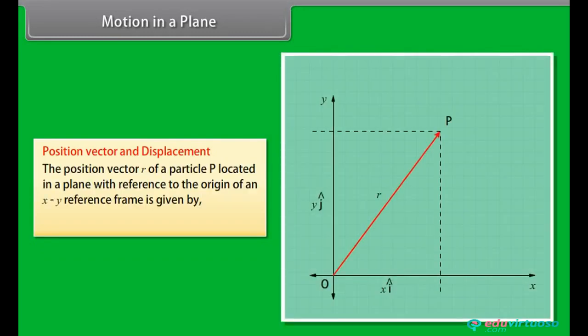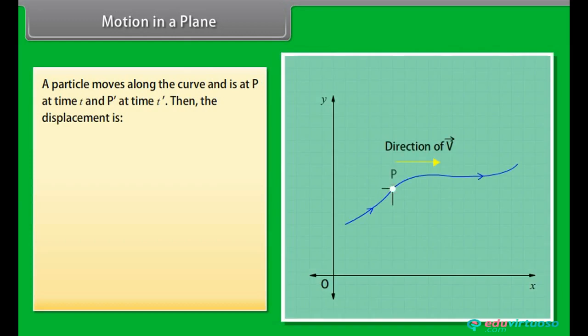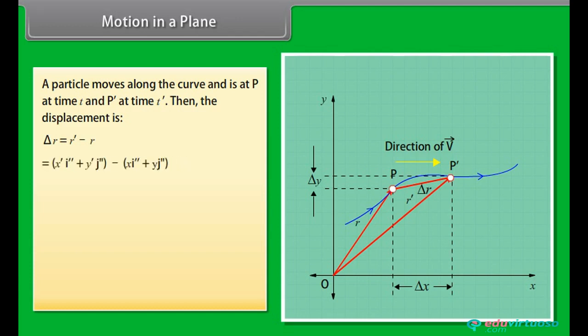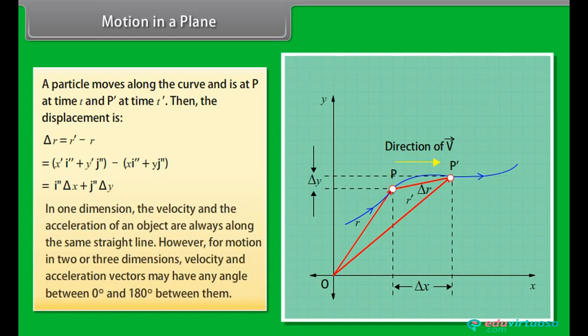Motion in a plane. Let's see motion in two dimensions using vectors. Position vector and displacement: The position vector R of a particle P located in a plane with reference to the origin of an XY reference frame is given by R is equal to XI plus YJ. A particle moves along the curve and is at P at time T and P dash at time T dash. Then the displacement is Delta R is equal to R dash minus R. By putting values we get Delta R is equal to I delta X plus J delta Y.